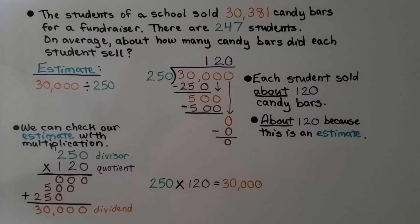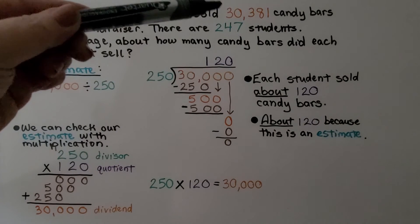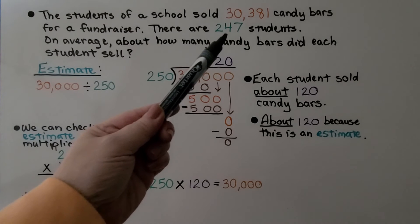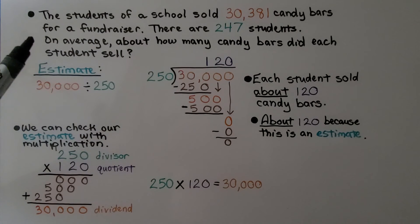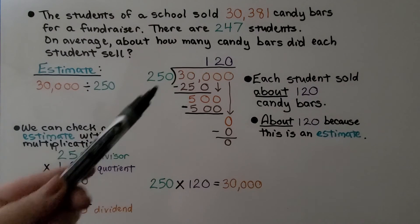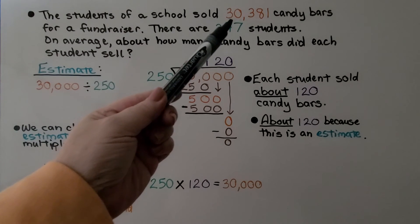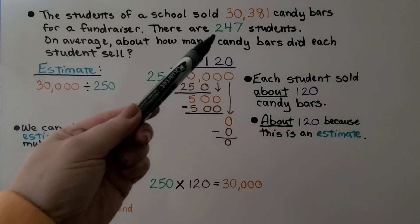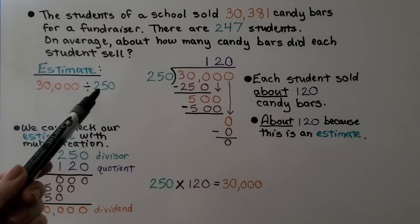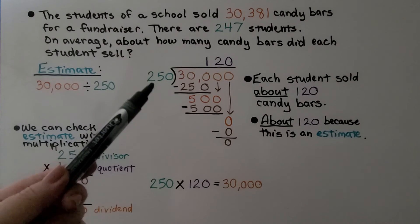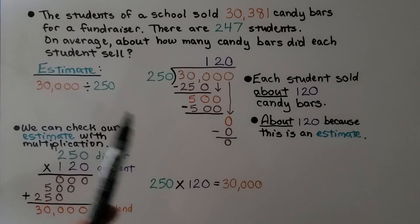Here we have another word problem. The students of a school sold 30,381 candy bars for a fundraiser, and there are 247 students. So, on average, about how many candy bars did each student sell? Well, we can estimate 30,381 as 30,000, and we can round 247 to 250, and we ask ourselves, how many times can 250 fit into 30,000?